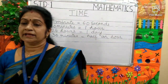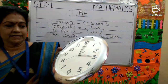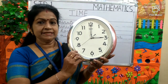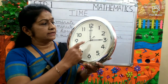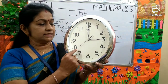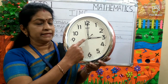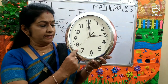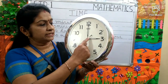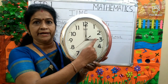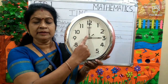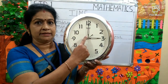Now, here is a clock. It has three hands. The thinnest one is the second hand. The shortest is the hour hand, and the longest is the minute hand.